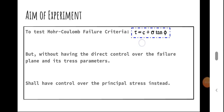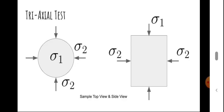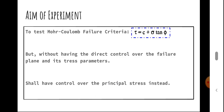The purpose of this experiment is to measure the cohesion c and the angle of internal friction phi. However, we do not have direct control over our plane of failure, so we also do not have control over the shear force or the compressive strength on that plane. When the sample breaks, it breaks at a particular angle and orientation that is unknown to us, so we won't have direct control over tau and sigma — but we can control our principal stresses.